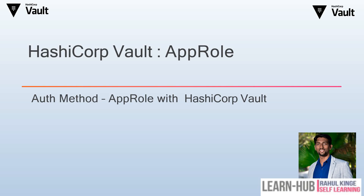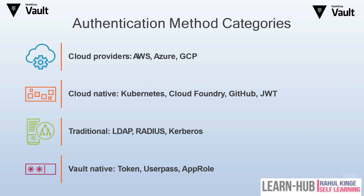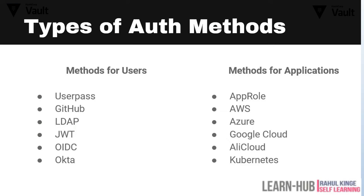In this session we will discuss more about AppRole as an auth method provided by Vault. As we discussed in the last session, we have multiple authentication methods like cloud provider, cloud native, traditional ways like LDAP, AD, and Vault native methods like token, user pass, and AppRole. The main two categories for auth methods are for users and for applications.